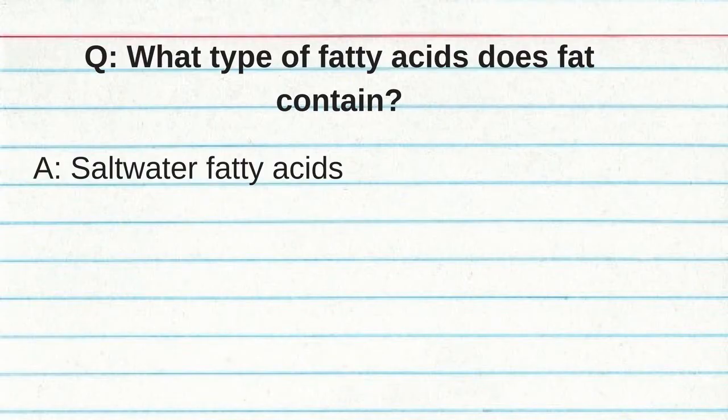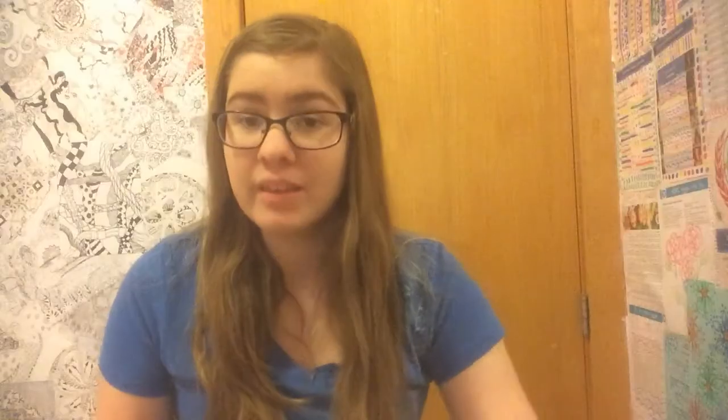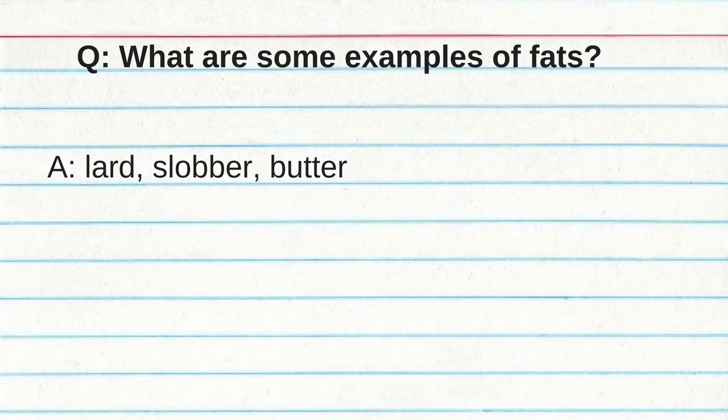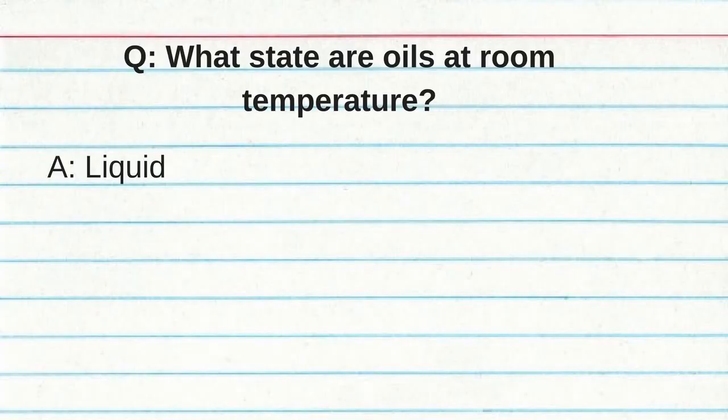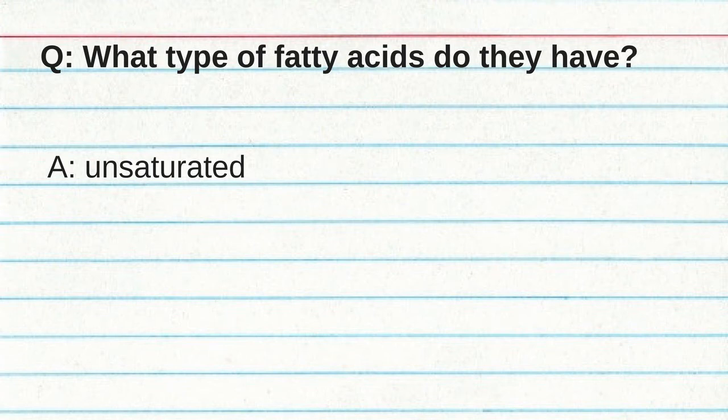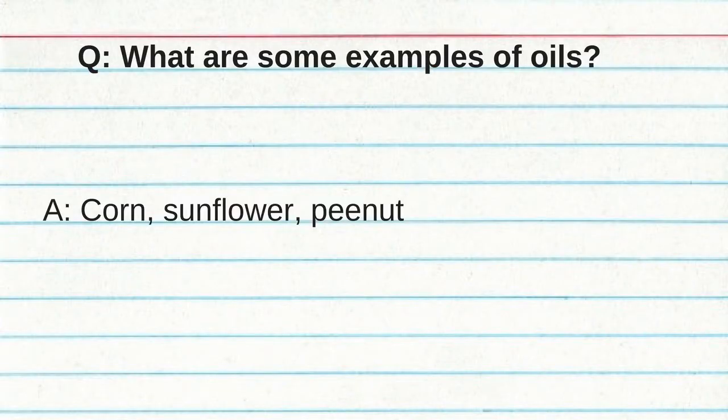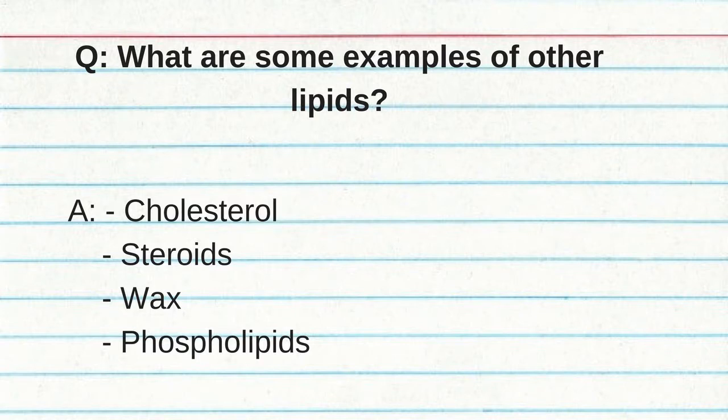Fat is solid at room temperature and contains saturated fatty acids. Eating fats can lead to cholesterol formation. Examples of fats include lard and butter. Oils are mostly found in plants, are liquid at room temperature, do not lead to cholesterol formation, and have unsaturated fatty acids. Examples of oils include corn, sunflower, and peanut oil. Other lipids include cholesterol, steroids, wax, and phospholipids.